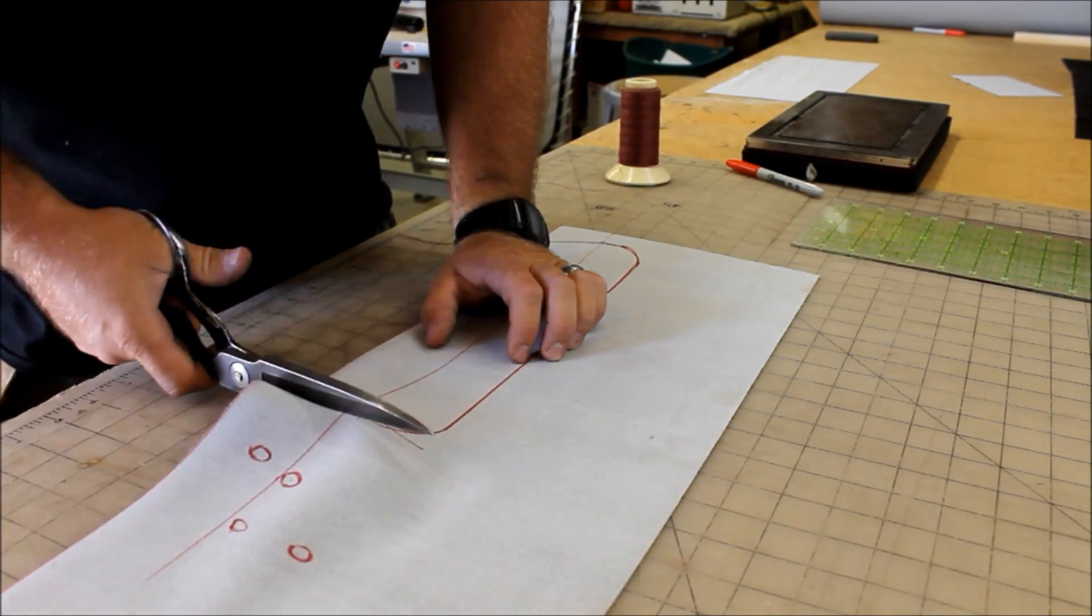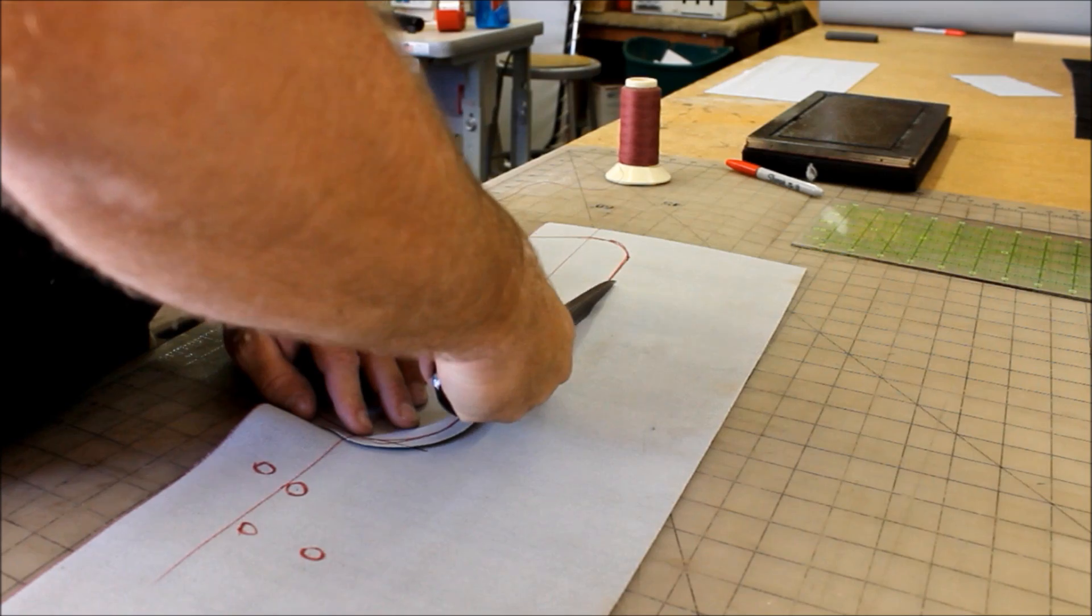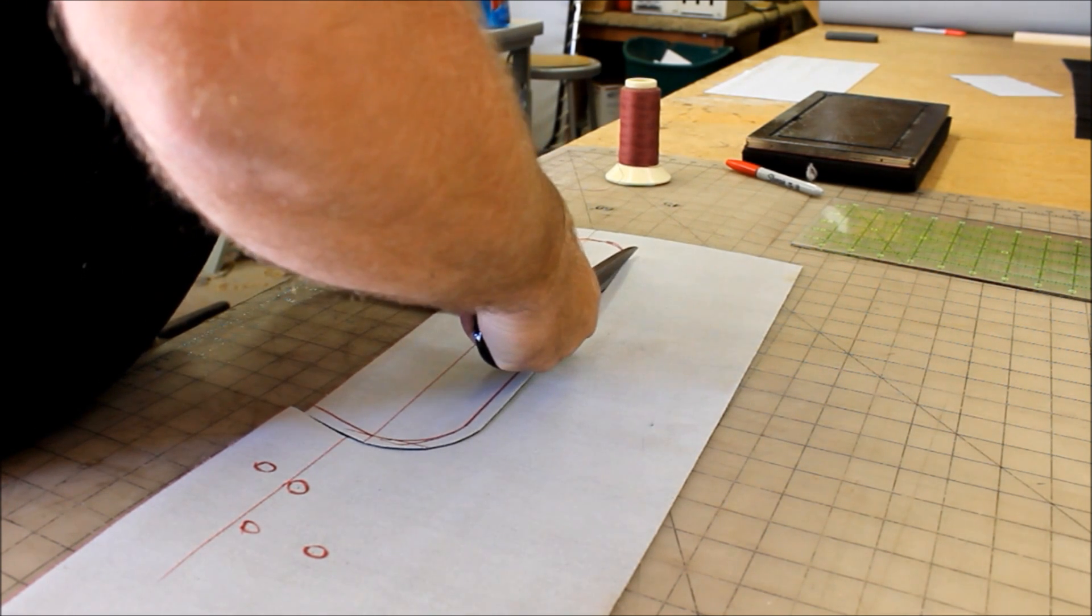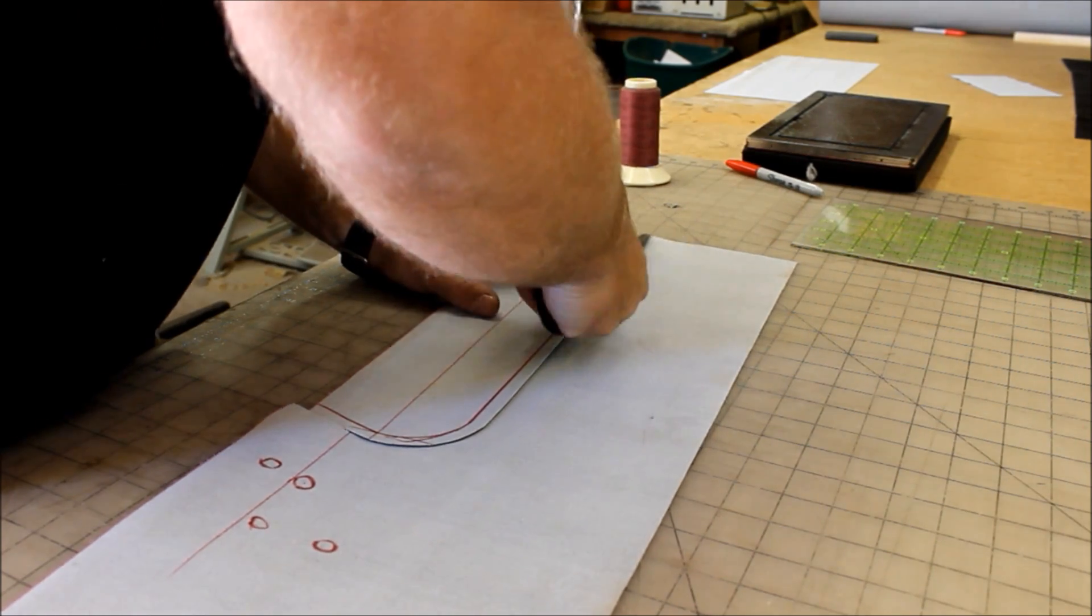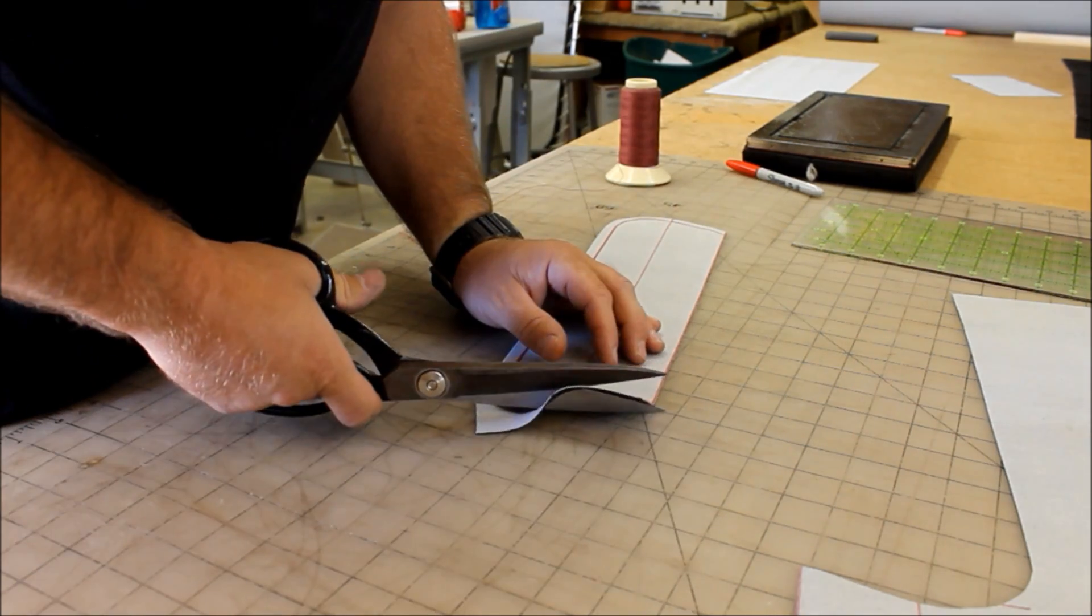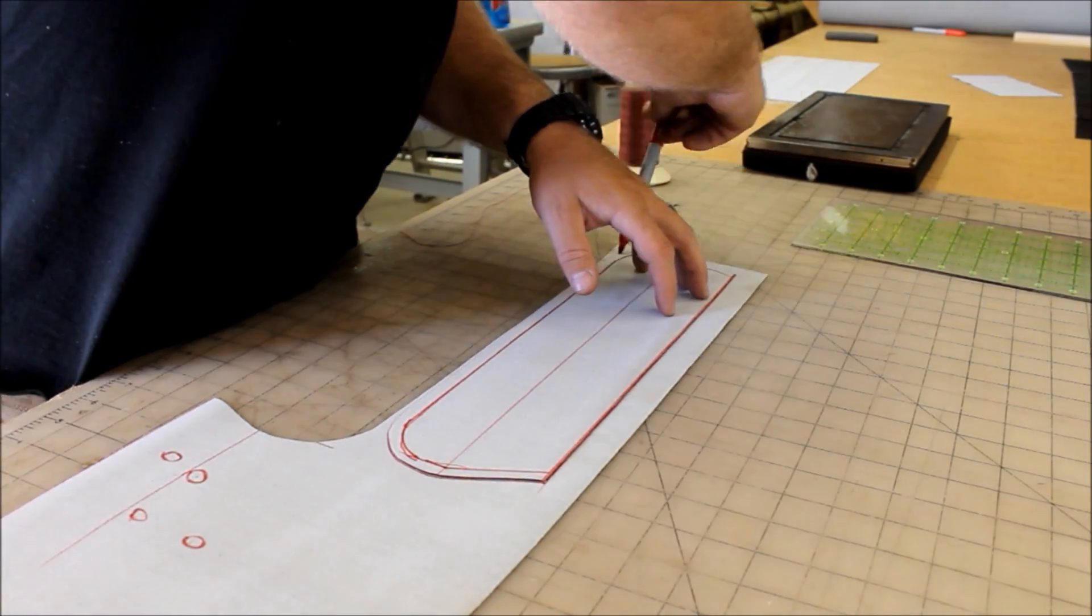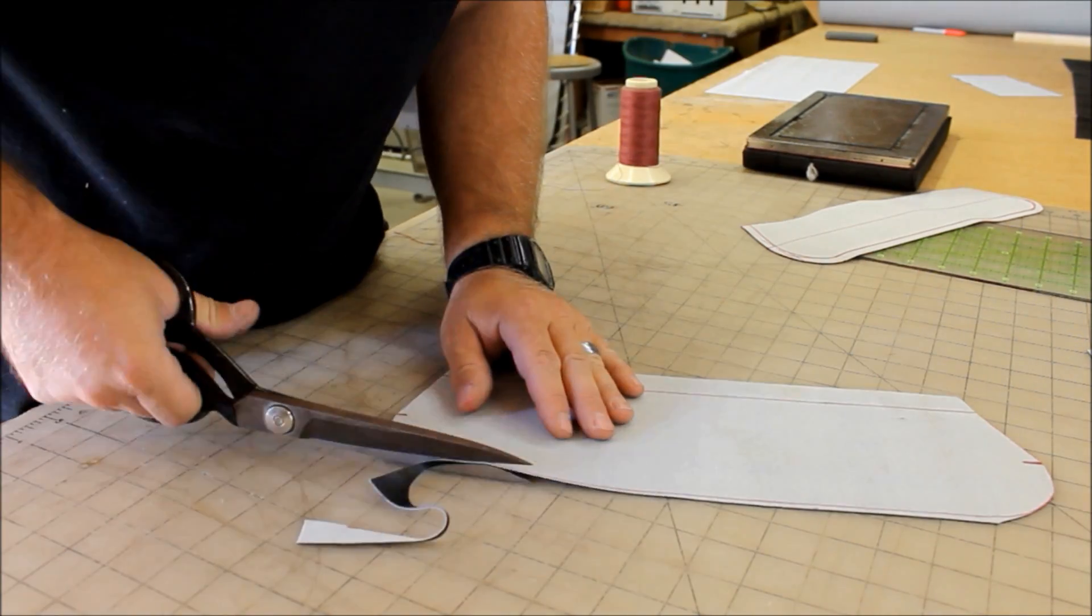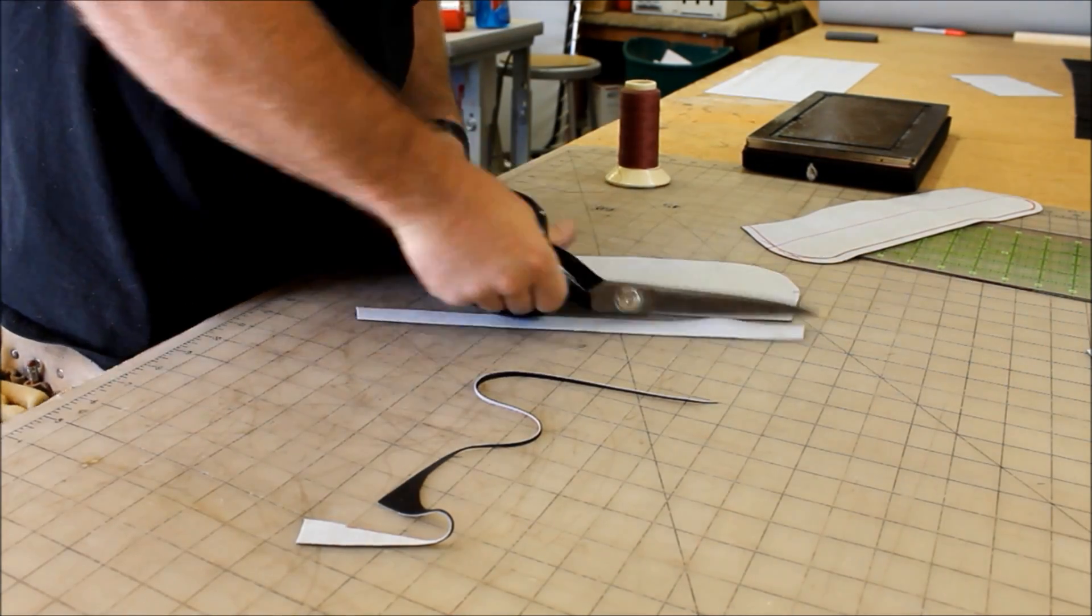Now if you look closely as I'm cutting this out, I'm adding my 3 eighths of an inch seam allowance. You'll see it there as I'm cutting. If you're not comfortable just cutting it like this, then use a ruler and draw your seam allowance. I've done this for many years and I'm just comfortable doing it this way. Now I'm going to use that pattern to create the pattern for the opposite side. This way I keep everything perfectly symmetrical and I know that the cover is going to fit well.